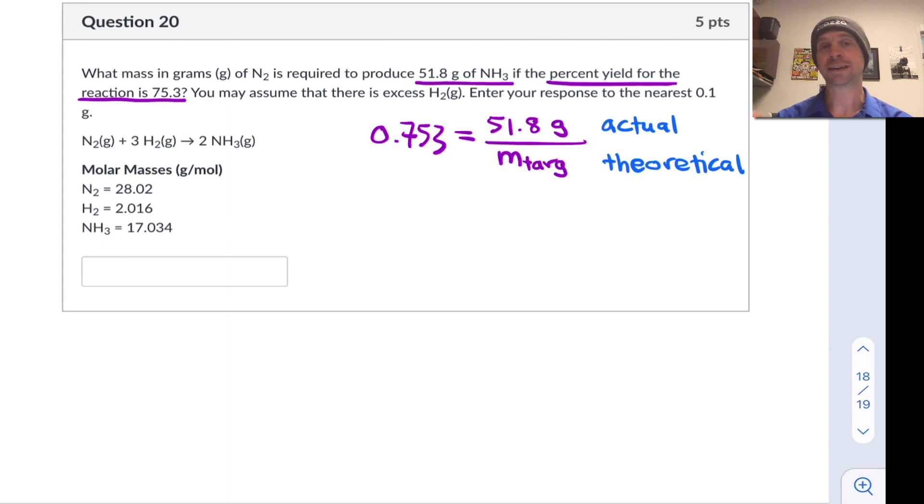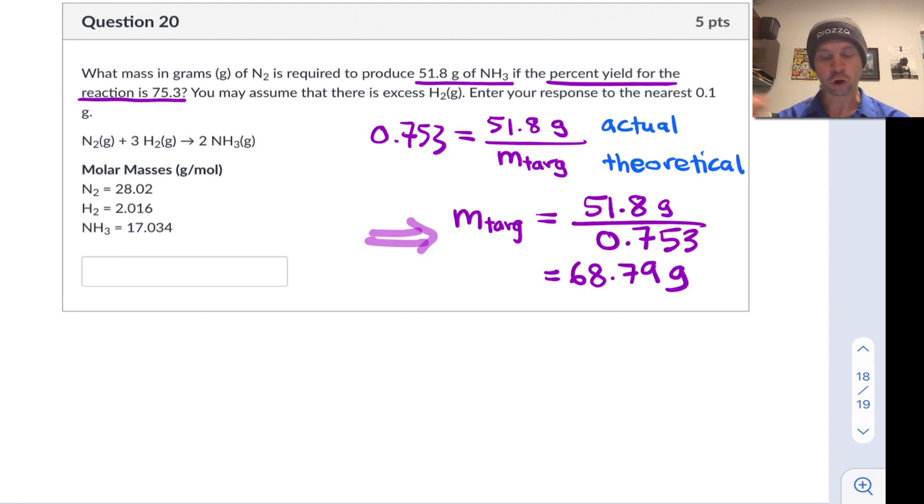The actual yield we're shooting for is 51.8 grams. The target yield, the theoretical target that we need to try to hit or aim for theoretically, we're going to call mTARG for the target mass. And this is the only unknown in this equation now, right? So we can rearrange things and solve for mTARG and we arrive at a target mass of 68.79 grams.